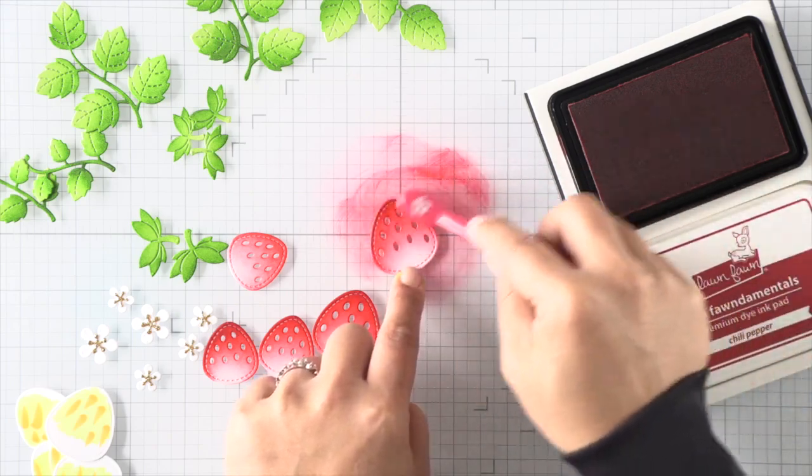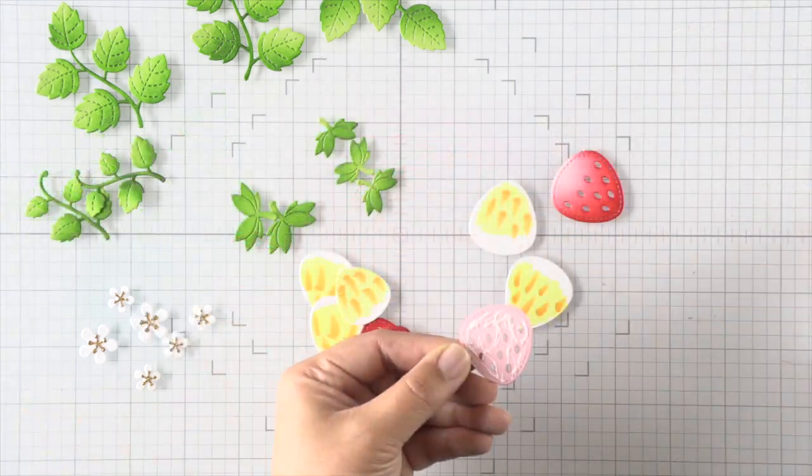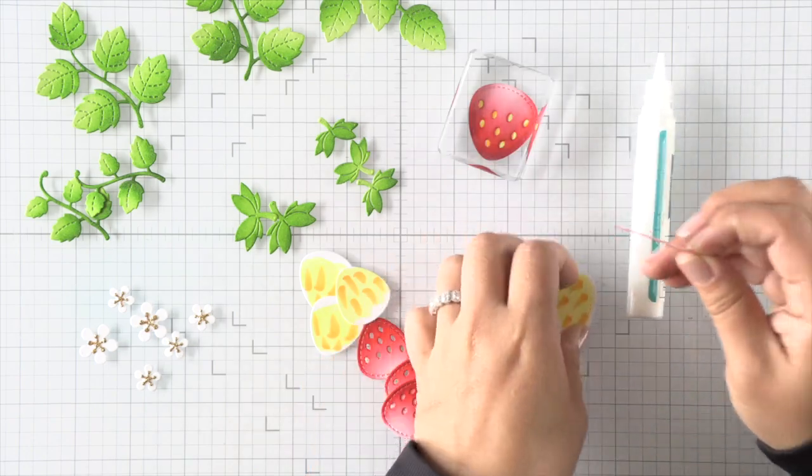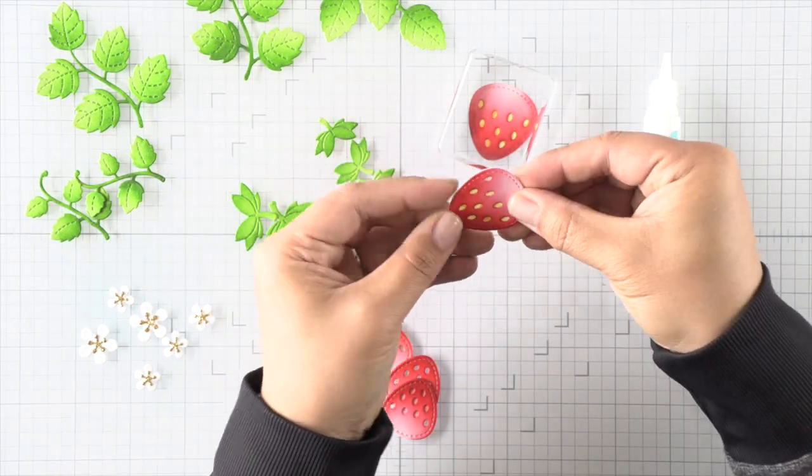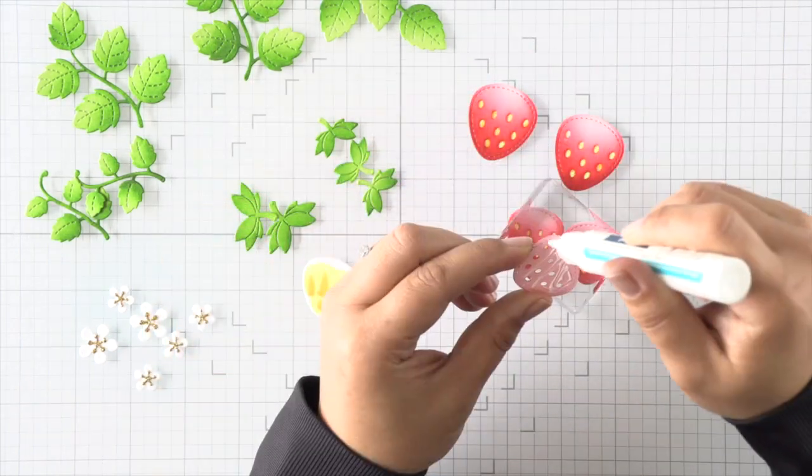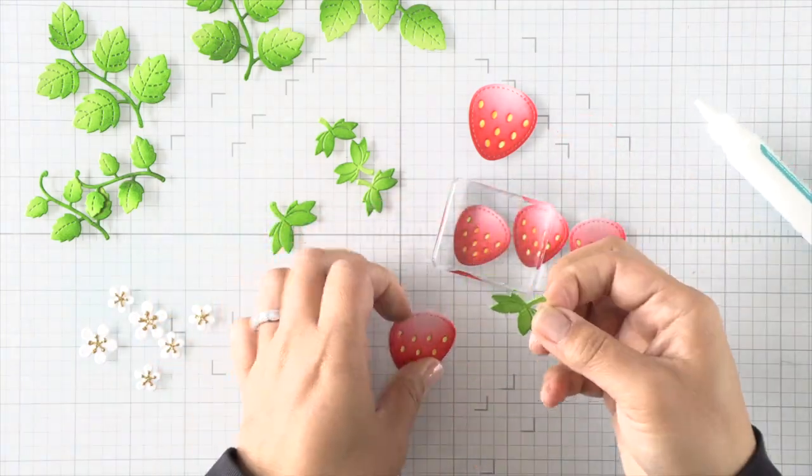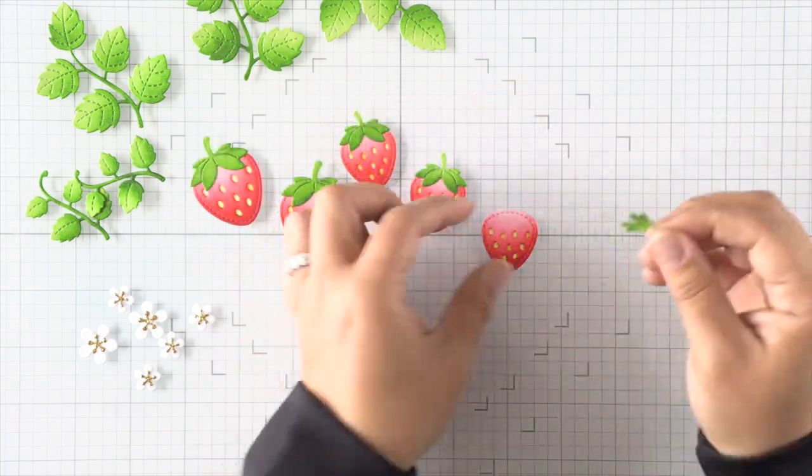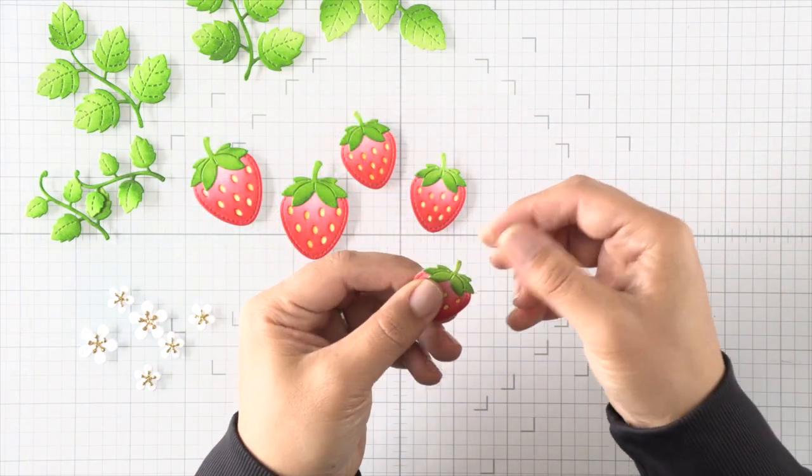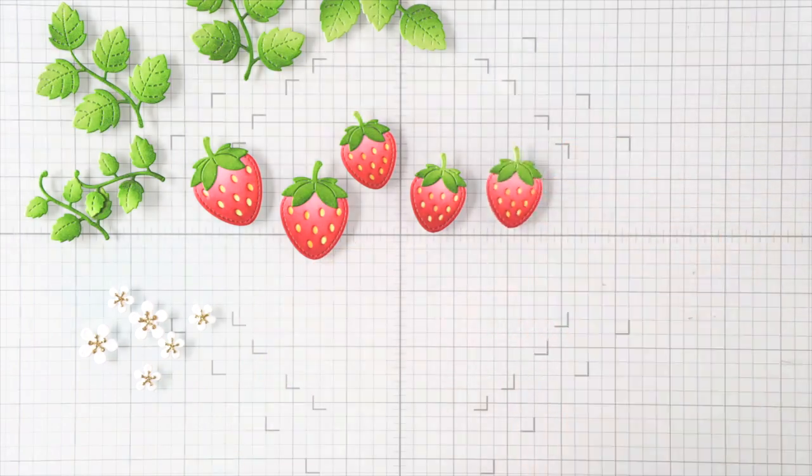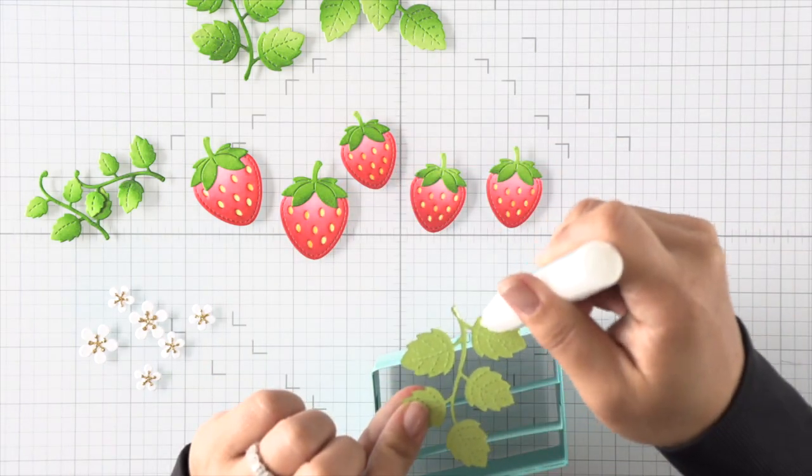Then I'll switch over to chili pepper ink—it's a darker red that's really gonna intensify and add shading to these strawberries. Once I'm done adding all of that color, I can go ahead and piece together these strawberries. I'm using some liquid glue on the strawberry pieces and then adding them to the Copic-colored backing so that you can see the yellow seeds pop through with a bit of orange.